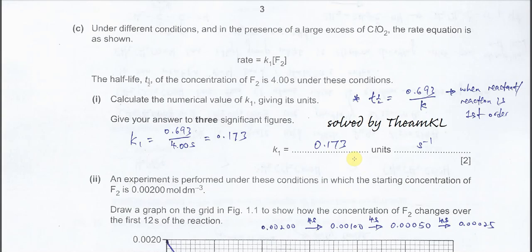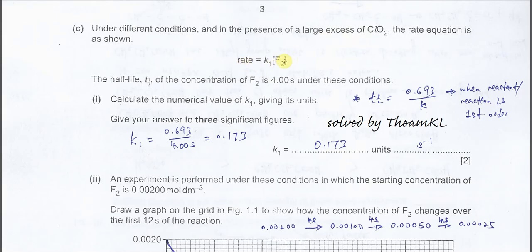Part C: under different conditions with a large excess of chlorine dioxide, the rate equation simplifies so that the rate now depends only on the concentration of fluorine, because chlorine dioxide is present in such a large amount. We follow this simplified rate equation.